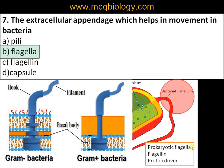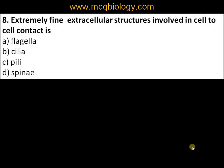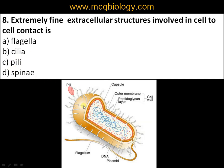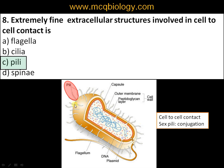Question number eight: extremely fine extracellular structures involved in cell-to-cell contact are called: A) flagella, B) cilia, C) pili, D) spinae. These fine structures involved in cell-to-cell contact are called pili. Pili are involved in conjugation — during conjugation, a donor bacterium contacts a recipient bacterium by means of these structures, and gene transfer takes place through them. When used in conjugation, they are called sex pili.